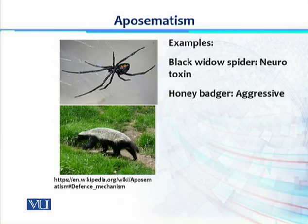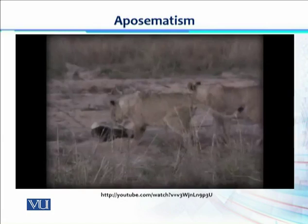Another common example is the black widow spider, which produces neurotoxins. Once it stings its predator, it releases neurotoxins causing partial or complete paralysis. The honey badger is a mammal that uses aggressive behavior as its aposematism strategy — it has sharp claws and sharp teeth, and is aggressive enough to threaten even lions.